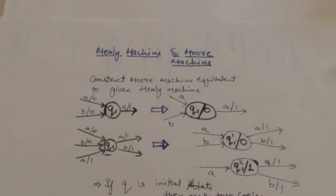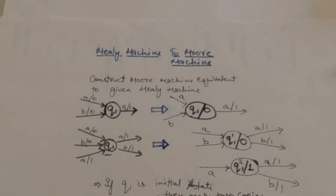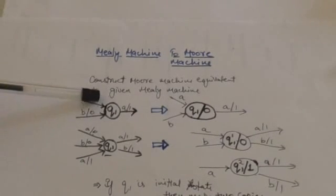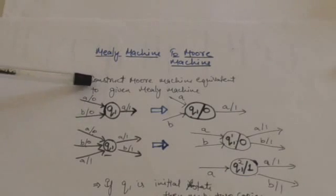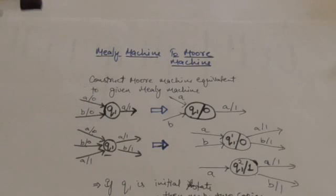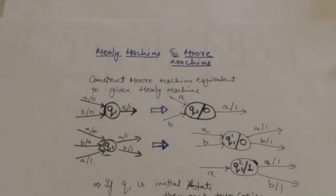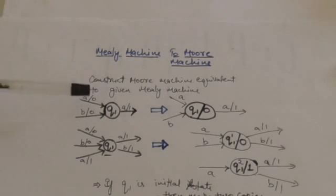When we have to transform a Mealy machine to a Moore machine, we have to transform each state of the Mealy machine into a state of the Moore machine. Look at this state Q1 — it is a state of the Mealy machine where outputs are associated with transitions, labeled on edges. We have to associate the output with states if we want to transform it into a Moore machine state.